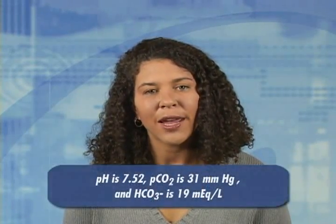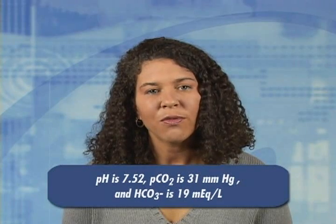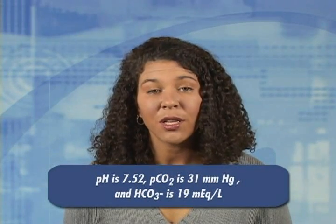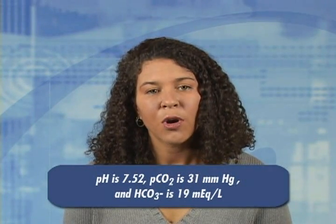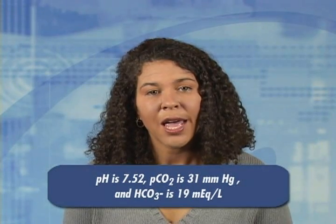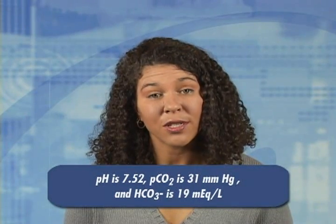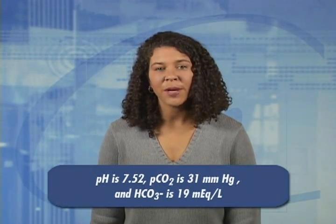Let's look at client number 8 for compensatory changes. The pH is 7.52, PCO2 is 31 mmHg, and HCO3 is 19 mEq/L. Partial compensation is seen in this example. HCO3 was excreted to balance the loss of CO2 from the respiratory system. The direction of the compensatory change was the same as the primary change — first the CO2 decreased, and then the HCO3 decreased. The correct interpretation is partially compensated respiratory alkalosis.